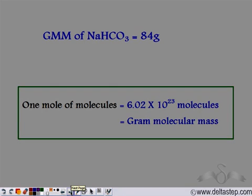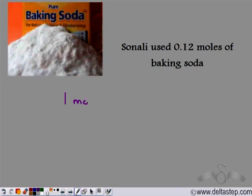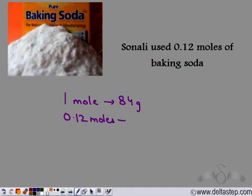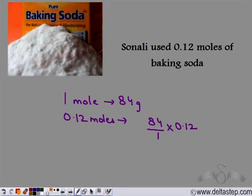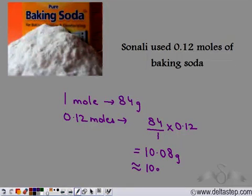Recalling that 1 mole of molecules weighs equal to the gram molecular mass of the substance, we know that 84 grams is the mass of 1 mole of baking soda. Sonali had used 0.12 moles, so using the unitary method: 84 ÷ 1 × 0.12 = 10.08 grams, which is approximately 10 grams. Now Sonali can tell the shopkeeper she needs 10 grams of baking soda, which makes sense to them.